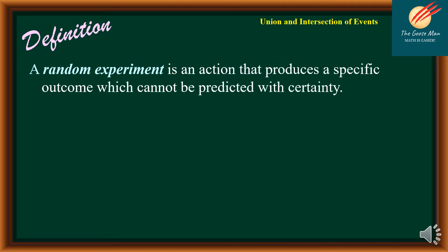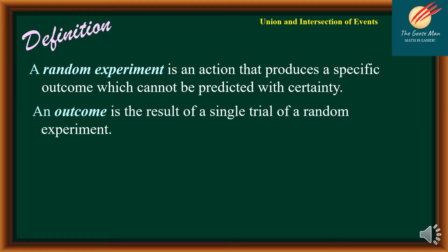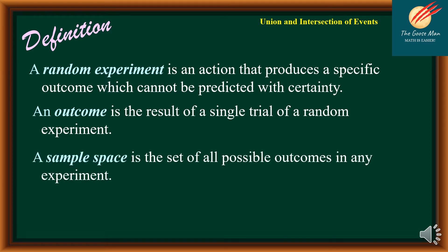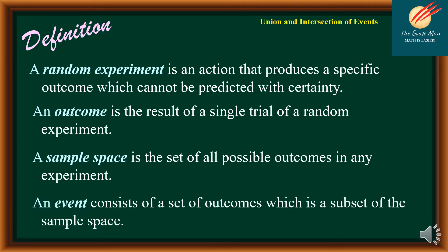A random experiment is an action that produces a specific outcome which cannot be predicted with certainty. An outcome is the result of a single trial of a random experiment. The sample space is a set of all possible outcomes in any experiment, while an event consists of a set of outcomes which is a subset of the sample space.